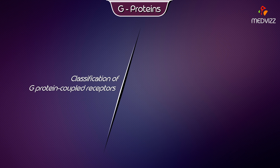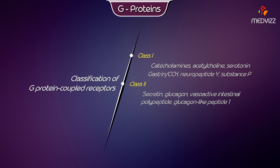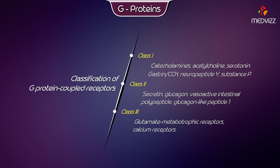Classification of G-Protein coupled receptors: Class 1 includes ligands such as catecholamines, acetylcholine, serotonin, gastrin, neuropeptide Y, and substance P. Class 2 includes secretin, glucagon, vasoactive intestinal polypeptide, and glucagon-like peptide 1. Class 3 includes glutamate metabotropic receptors and calcium receptors.